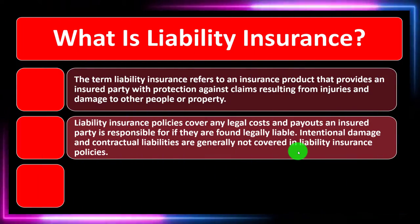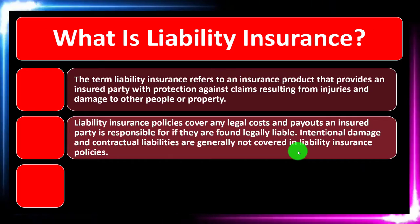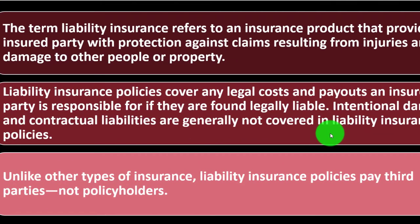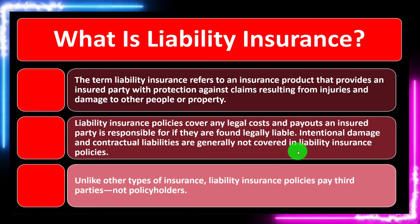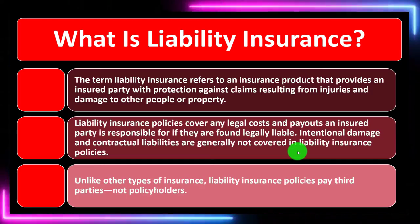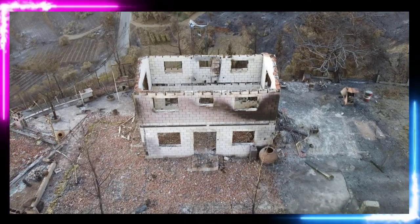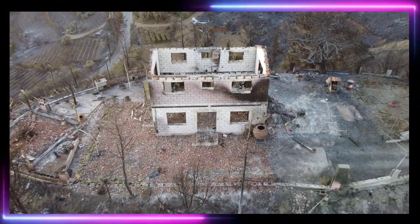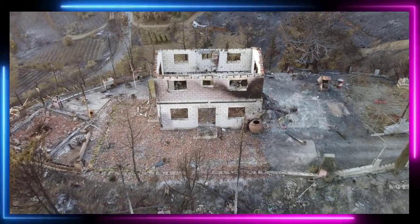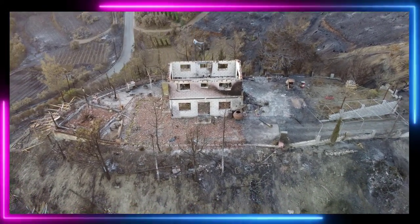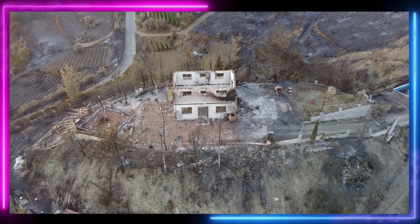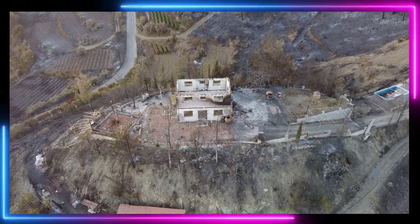Unlike other types of insurance, liability insurance policies pay third parties, not policyholders. If there's damage that someone else claims is your fault, the insurance company pays the third party — the one claiming the damage — not the policyholder themselves.